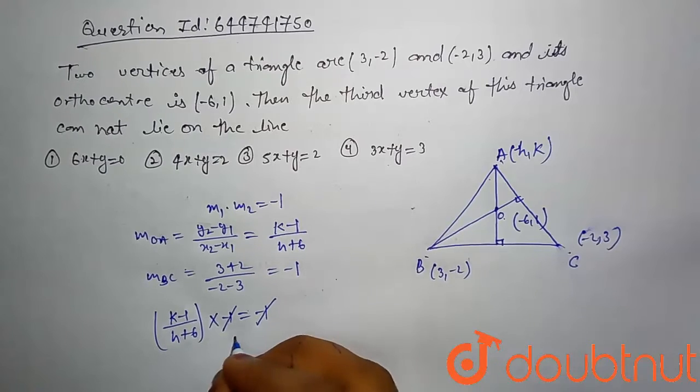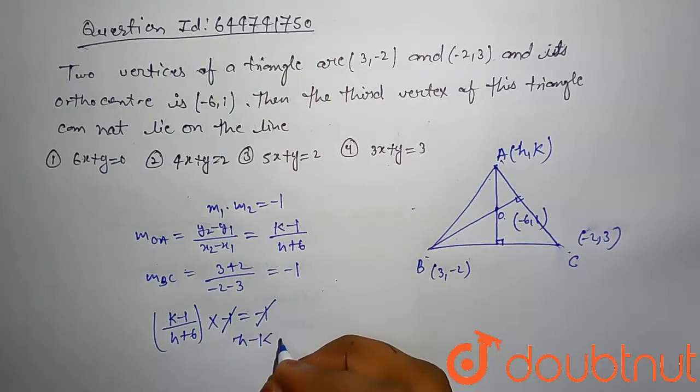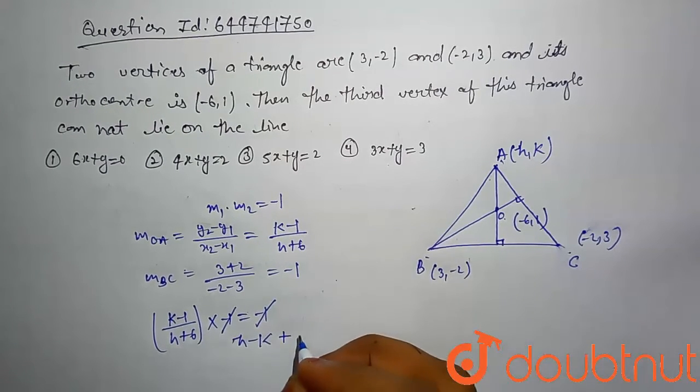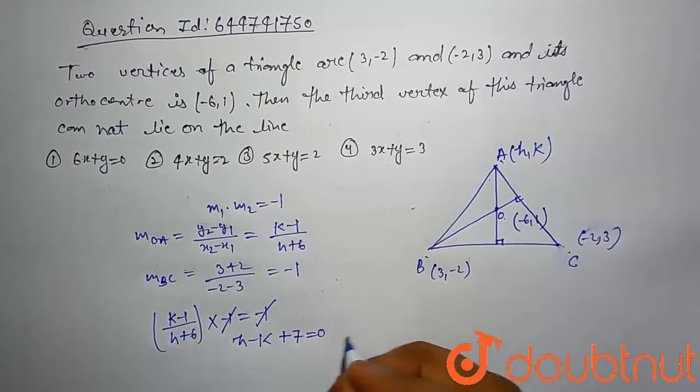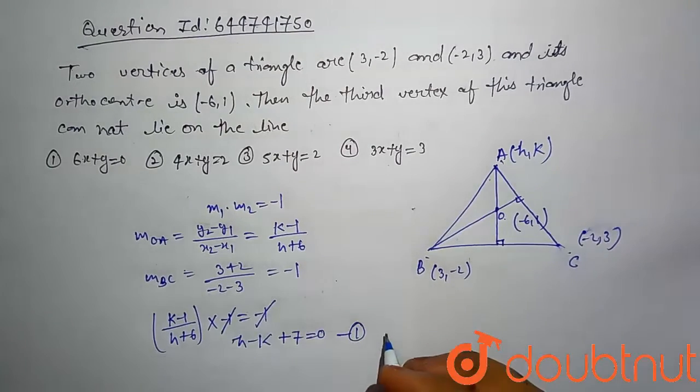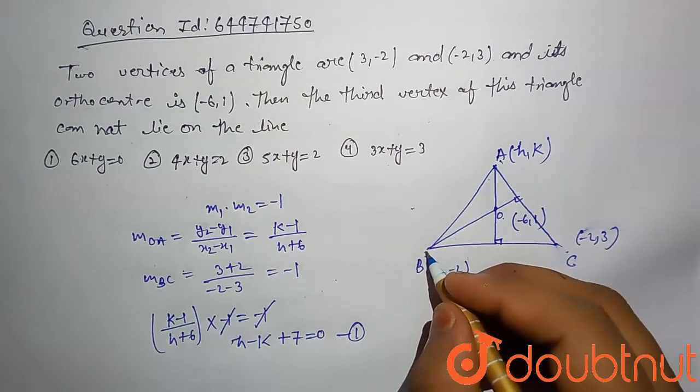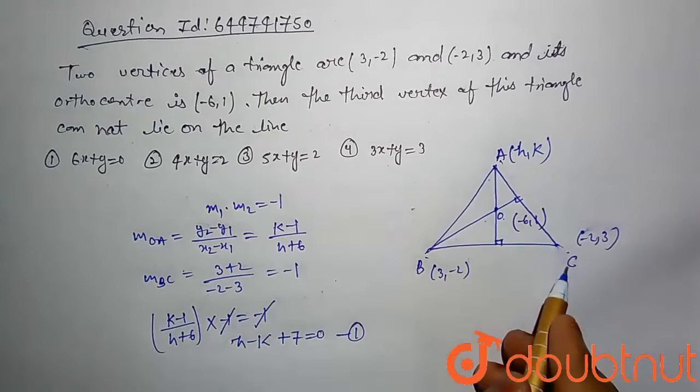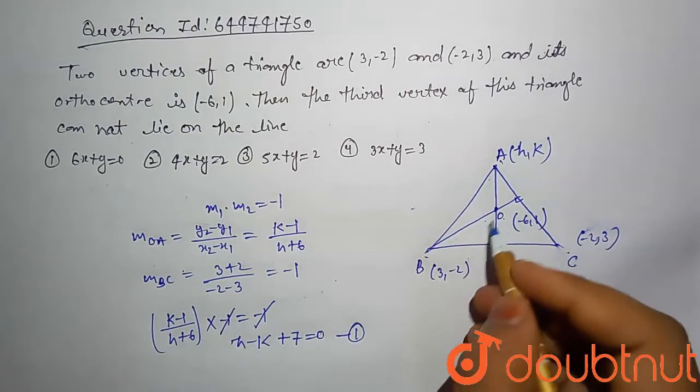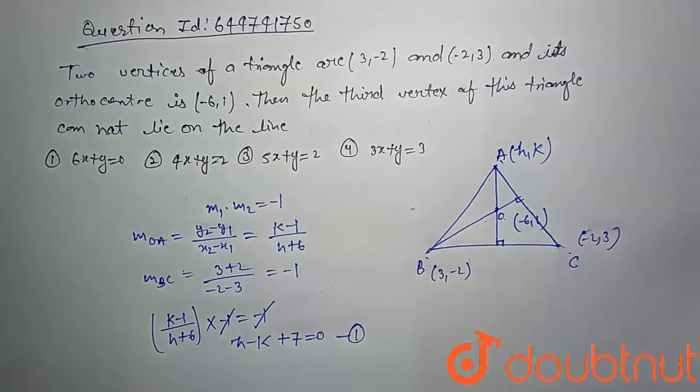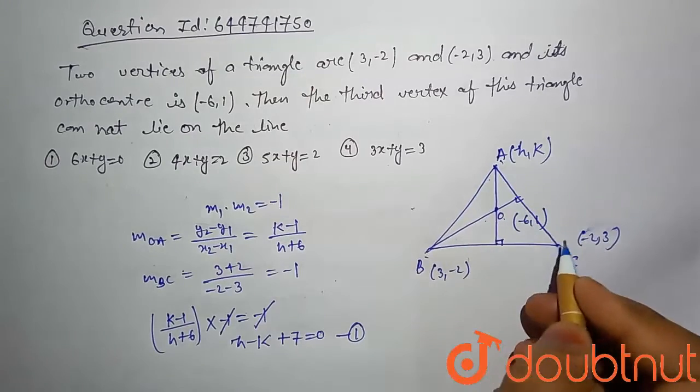Hence h - k + 7 = 0. This is our first equation. Similarly, we have to calculate slope of BO and slope of AC, and product of these two slopes equal to -1 because these two are perpendicular.